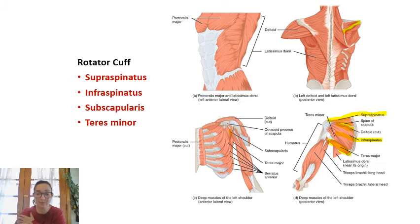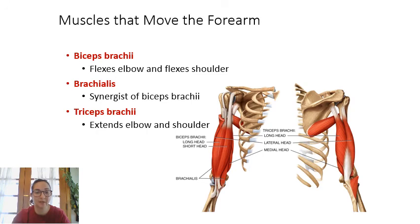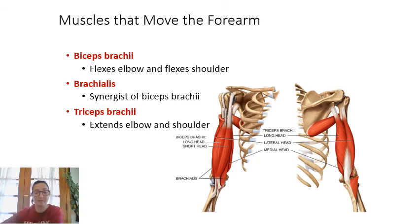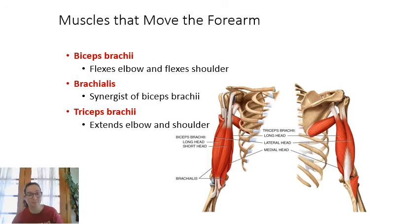Muscles that move the forearm: biceps brachii and brachialis — the biceps is on the arm but moves the forearm, and brachialis is synergistic with it. Both are antagonists to the triceps brachii, which extends the elbow and straightens the arm.